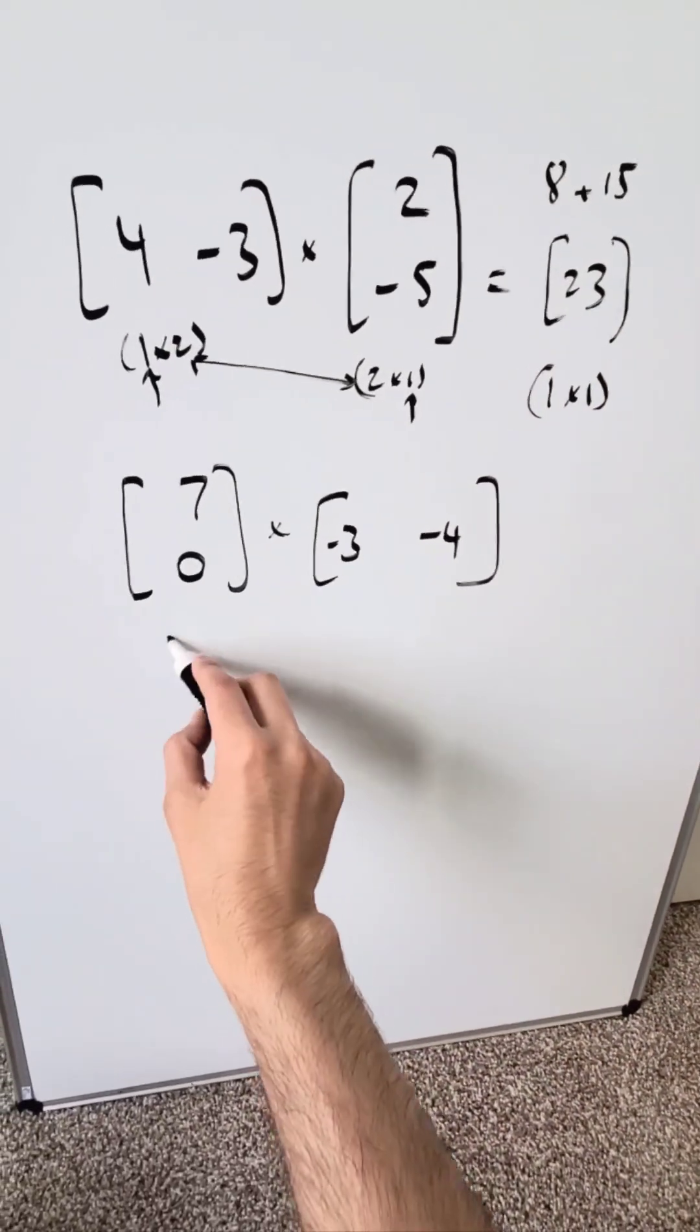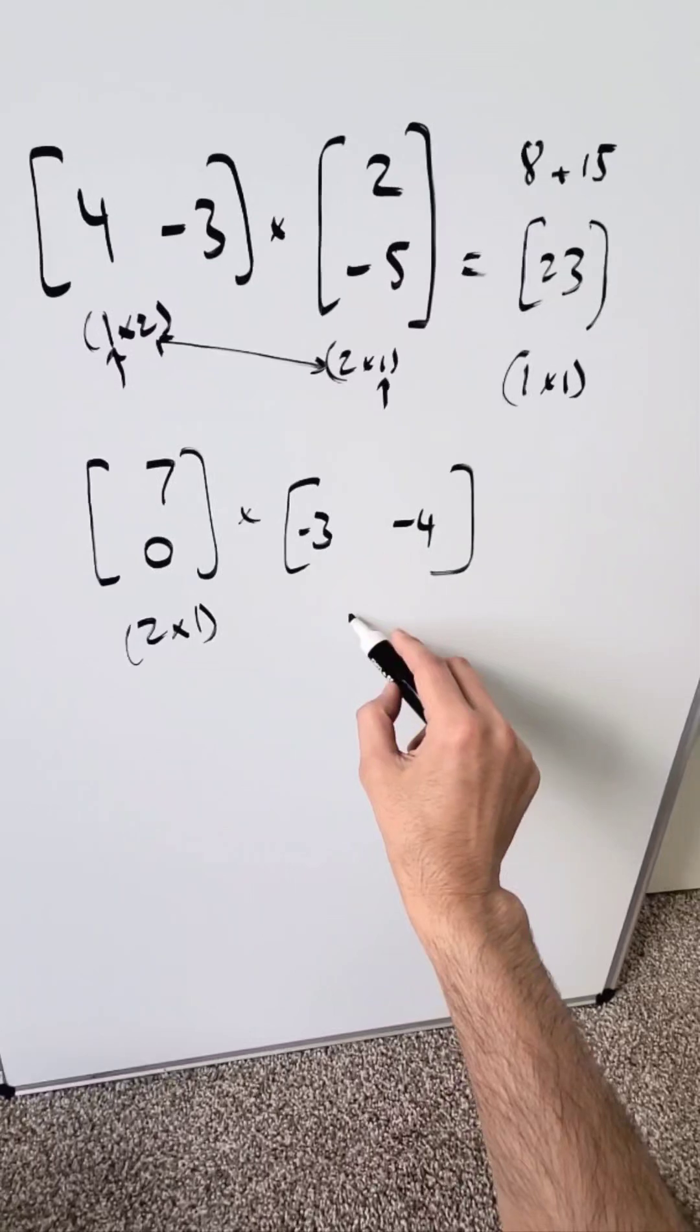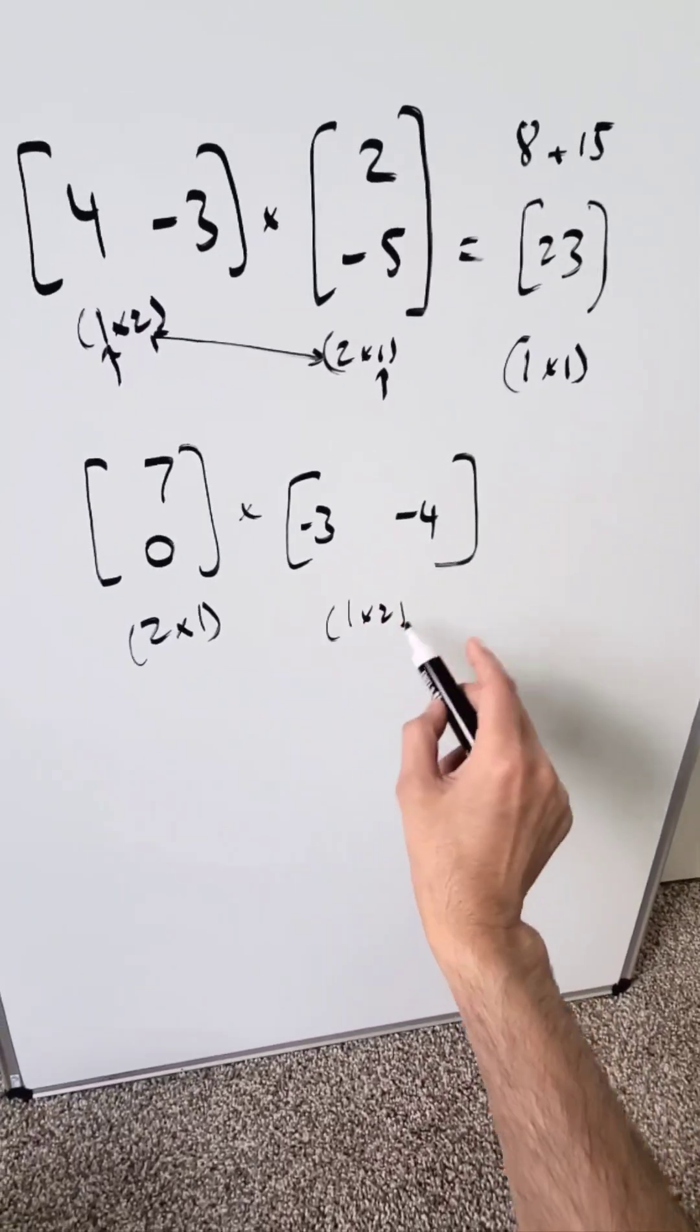Now look right here. We have a 2 by 1 matrix, 2 rows, 1 column. Here we have a 1 by 2, 1 row, 2 columns.